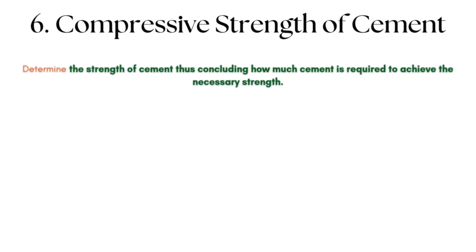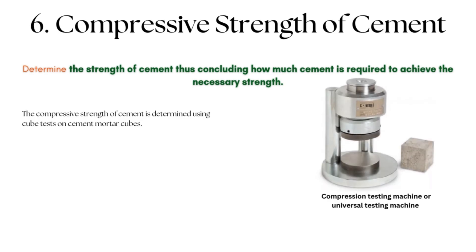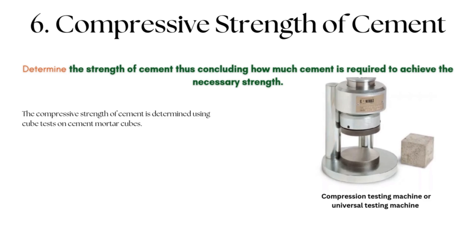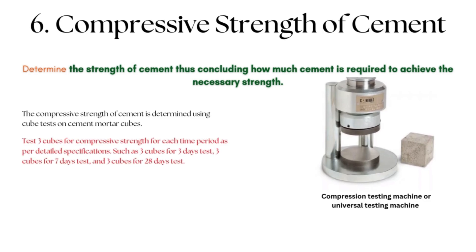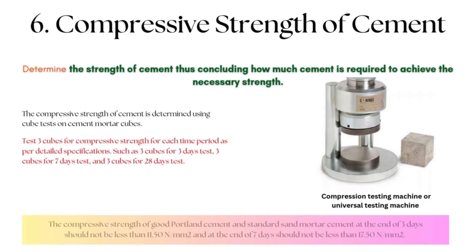Compressive Strength of Cement: Compressive strength tests on cement determine the strength of cement, indicating how much cement is required to achieve the desired strength. It is determined using cube tests on cement mortar cubes, tested in a compression testing machine or universal testing machine. Three cubes are tested for each time period: 3 cubes for 3 days, 3 cubes for 7 days, and 3 cubes for 28 days. The compressive strength of good Portland cement at 3 days should not be less than 11.50 N/mm², and at 7 days should not be less than 17.50 N/mm².